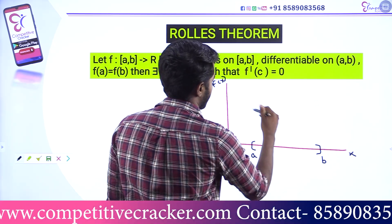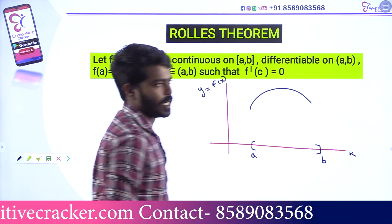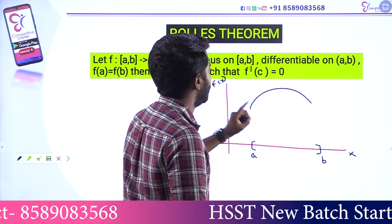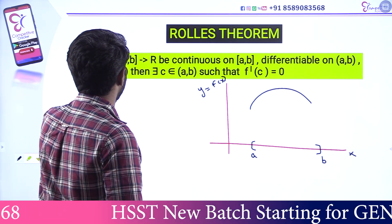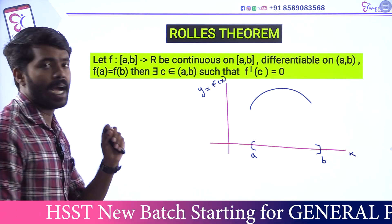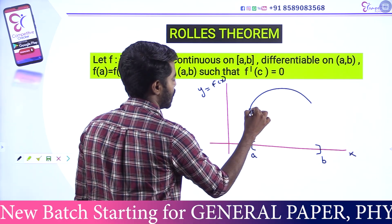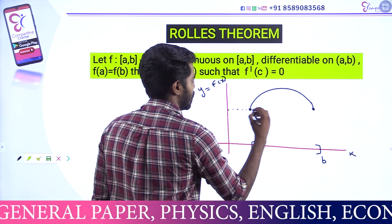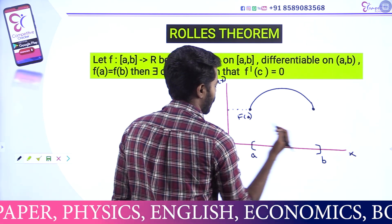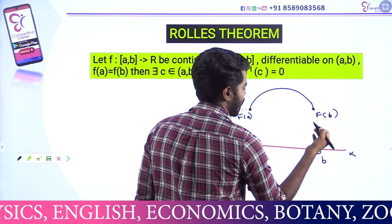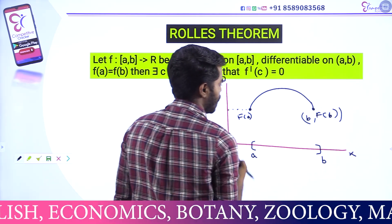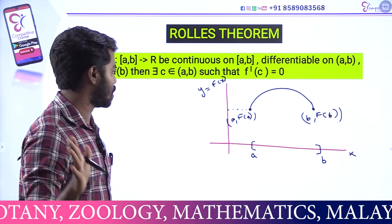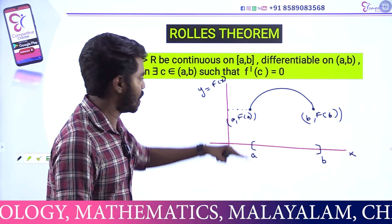Now I will represent this function graphically. This function is continuous and differentiable. F of A is equal to F of B. This is F of A, this is F of B. These two points are equal — F of A is equal to F of B.